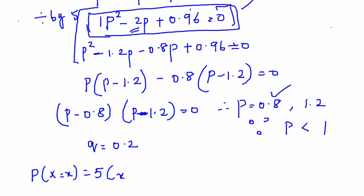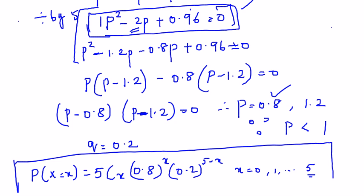p is 0.8, so 0.8^x, q is 0.2, so 0.2^(5-x), where x takes the values of 0, 1, up to n.